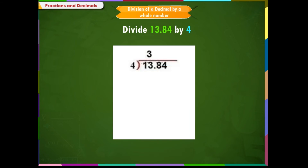Example 3: divide 13.84 by 4. We divide the numbers using the long division method by ignoring the decimal point. Therefore, 13.84 divided by 4 gives 346. Since there are two places of decimal in the dividend, we put the decimal point on the result by counting two places from the right.